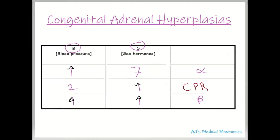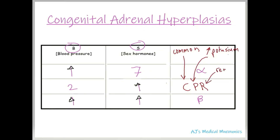In 21-hydroxylase deficiency: C is for most common — it's the most common CAH. P is for increased potassium; in the other two conditions potassium is decreased. And R is for increased renin — it's the only one of the three that has increased renin.